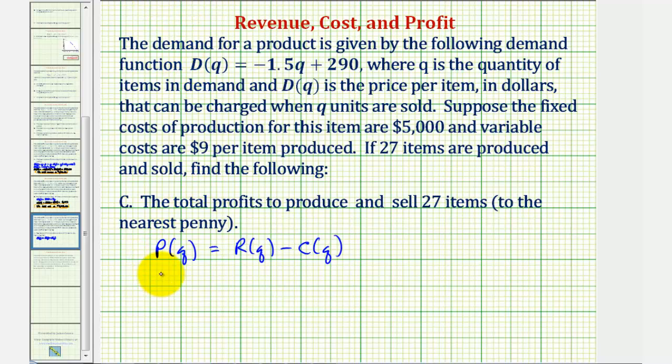So if Q equals 27, the total profit would be P of 27, which is equal to R of 27 minus C of 27. Well, we just found these two function values.